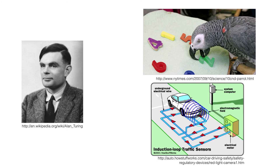What do we mean when we think about computer systems or programs tackling tasks that require human-level intelligence? It's a really tricky concept to pin down once we try to be formal about it. It's easy to look at our fellow humans and see that they're intelligent, and most would argue it's easy to look at advanced animals and see that they're intelligent. But things get pretty tricky when we try to look at electronic or even mechanical systems that might exhibit some intelligent behavior.